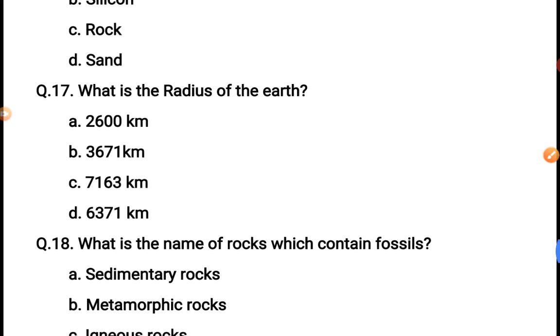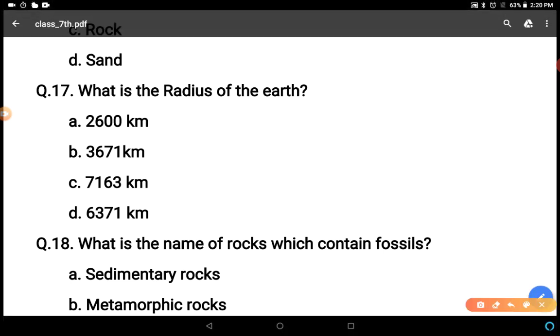What is the radius of the earth? 2600 kilometer, 3671 kilometer, 7163 kilometer and 6371 kilometer. Definitely it is very easy question. You can identify D is the correct answer.